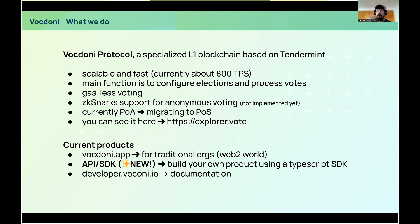We hope that in about two months ZK-SNARKs will be available in our SDK. Currently we are a proof of authority, but we are working to migrate to a federated proof of stake. You can check our Vocdoni blockchain at explorer.vote, where you can find all transactions, elections, votes, verify votes, and check the current status of the blockchain, among other things.